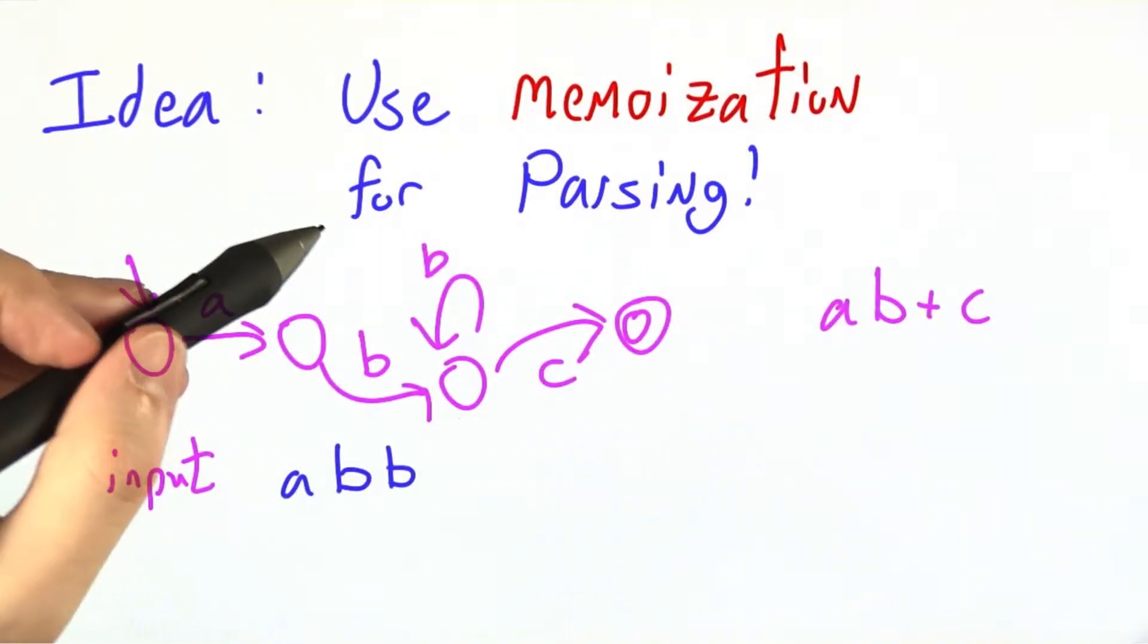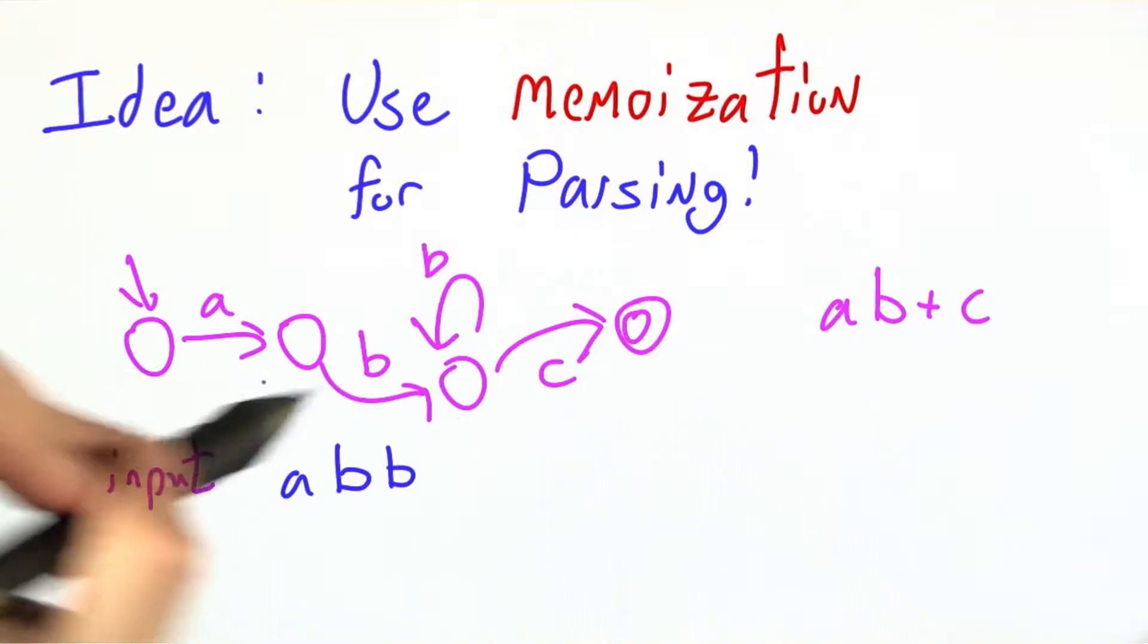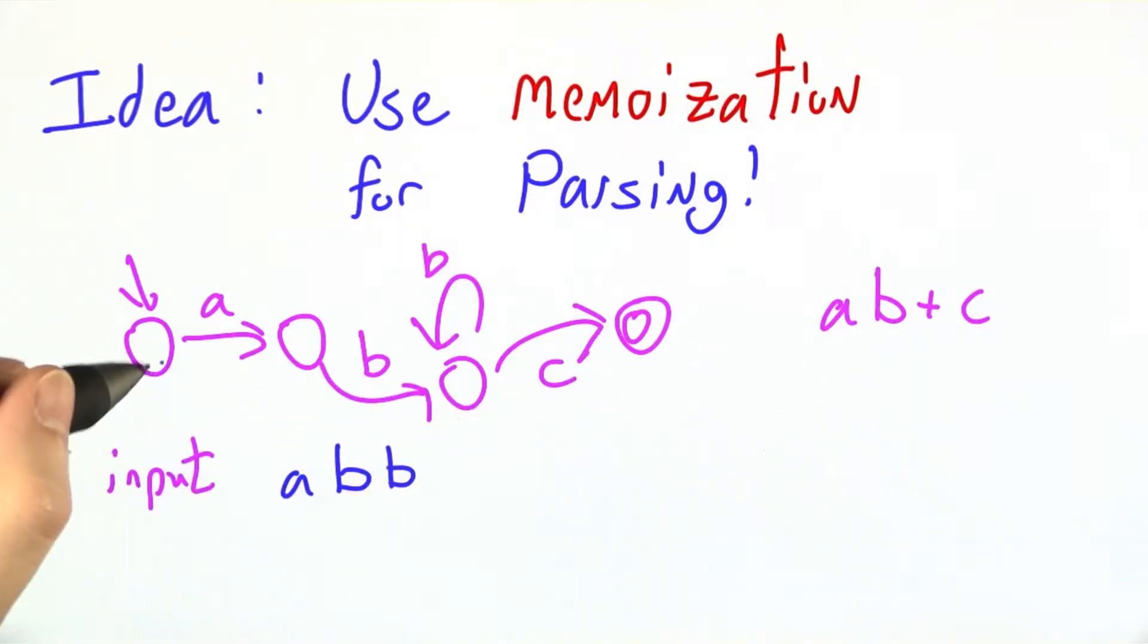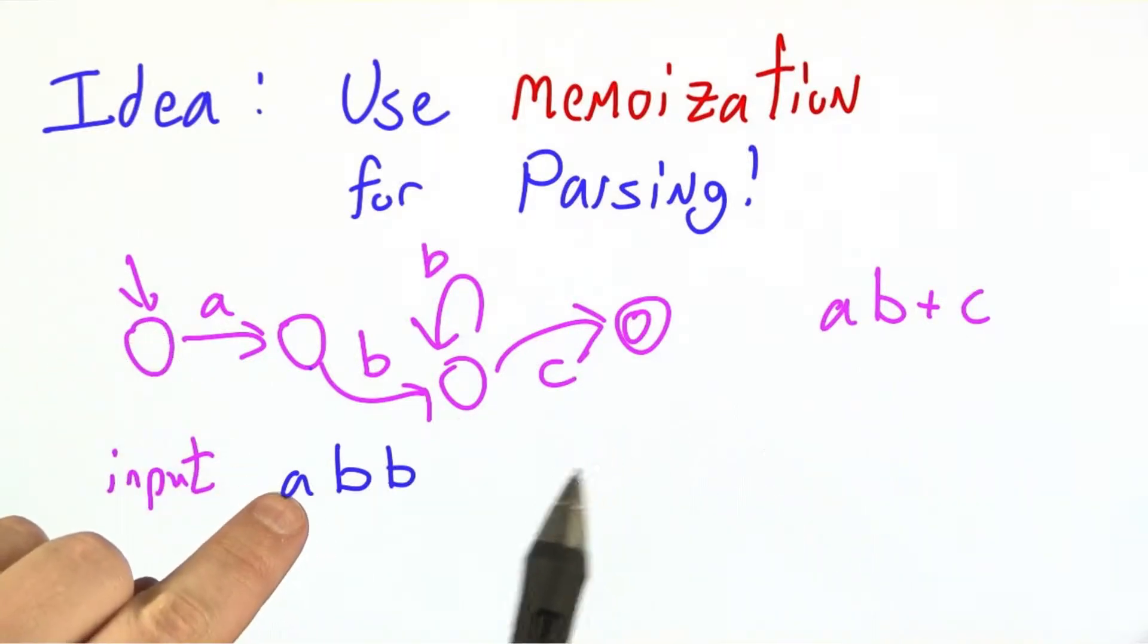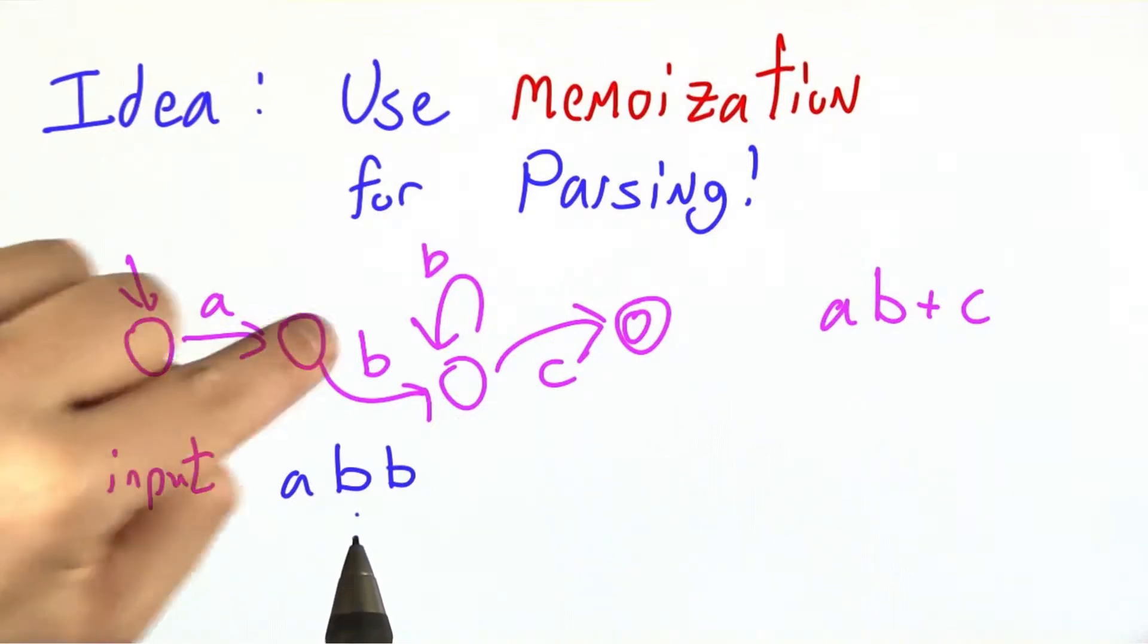Let's cast our minds back to the glory days of regular expressions and finite state machines. In order to see if a string was accepted by a finite state machine, we'd essentially keep our finger on the state. So on input a, b, b, a, b...